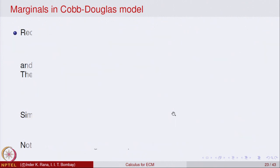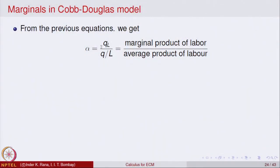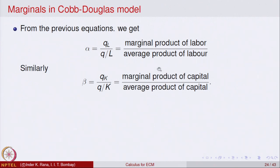Using these values, alpha equals the partial derivative of Q with respect to L divided by Q over L. The partial derivative of Q with respect to L is the marginal product of labour, and Q over L is the average product of labour. So alpha is the marginal product of labour divided by the average product of labour. Similarly, beta equals the marginal product of capital divided by the average product of capital.